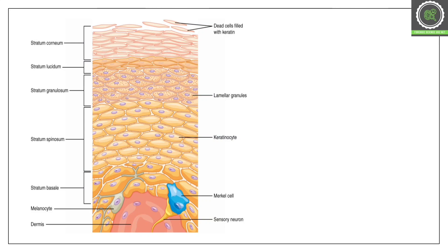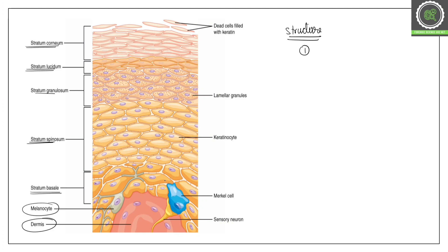We can say that there are seven important layers of the skin: stratum lucidum, stratum granulosum, stratum spinosum, and stratum basale. Then we have melanocytes, followed by the dermis as the next layer, and finally the hypodermis as the last layer of the skin.